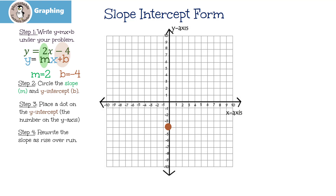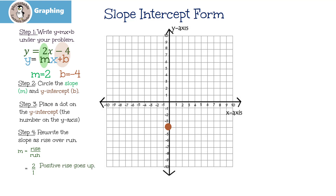Our next step is to rewrite the slope as rise over run. So we know the slope is rise over run, so that's going to give us 2 over 1. You notice that the slope is 2, but to write a whole number as a fraction, we just stick it over 1. So the top means positive. Since the 2 is positive, we know we're going to rise — we're going to go up. And since the denominator is also positive, we're going to run to the right, or the positive direction.